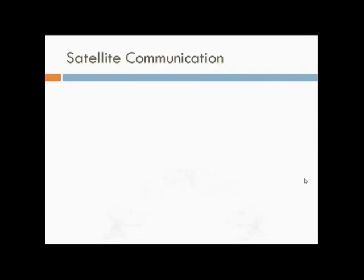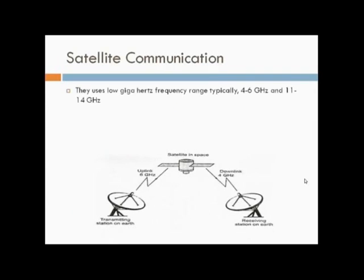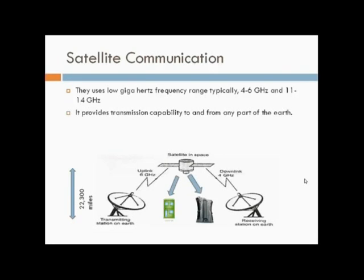Satellite communication: Like terrestrial microwave systems, they use low GHz frequencies, typically 4-6 GHz and 11-14 GHz, and must be in line of sight. The main difference is that one antenna is on a satellite in geosynchronous orbit about 20,000 miles above the equator, providing transmission capability to and from any part of Earth.